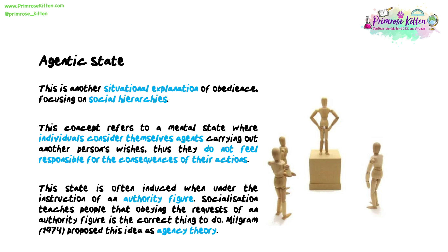Agentic state. This is another situational explanation of obedience, focusing on social hierarchies. This concept refers to a mental state where individuals consider themselves agents carrying out another person's wishes, and thus they do not feel responsible for the consequences of their actions. This state is often induced when under the instruction of an authority figure. Socialisation teaches people that obeying the requests of an authority figure is the correct thing to do.